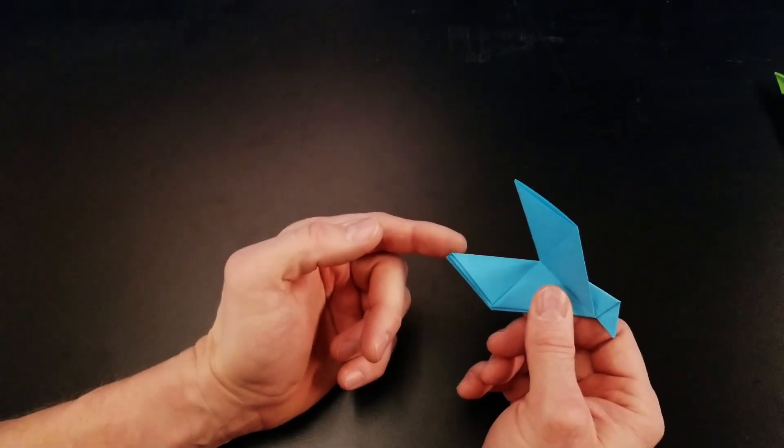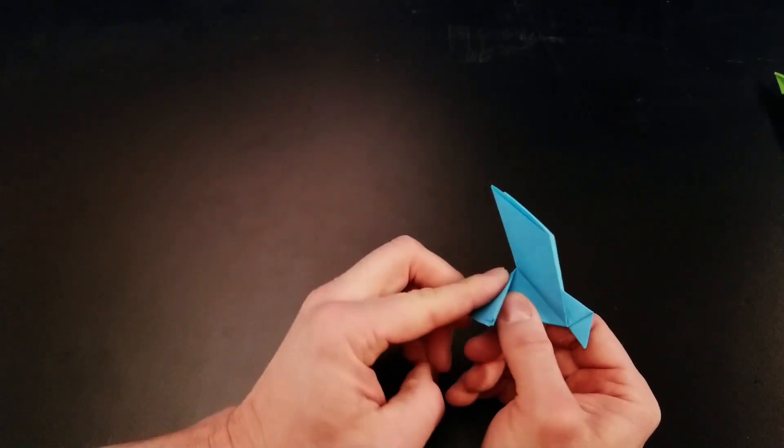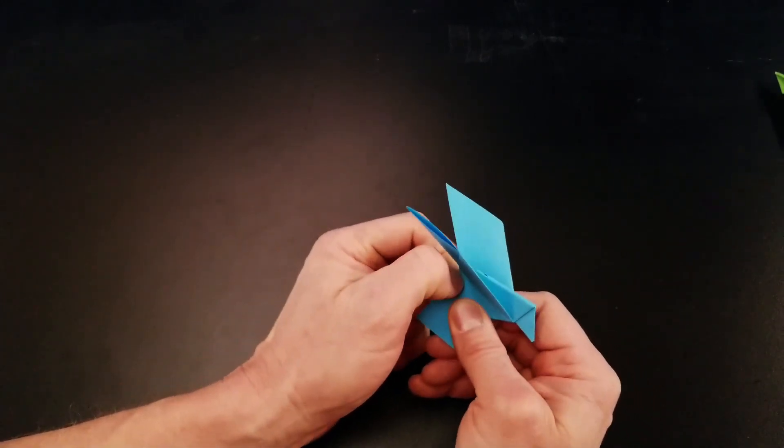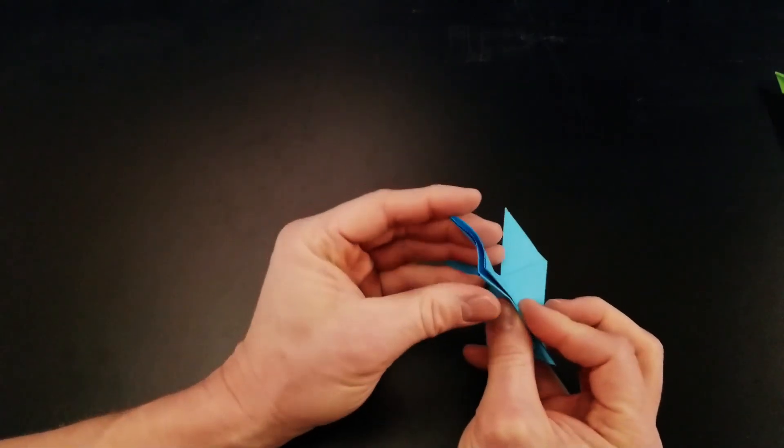Now what I'm going to do is I'm going to take this tail, I'm going to fold it along this paper edge here. I'm going to fold that in and I'll give that a good crease, and I'm going to open this up.